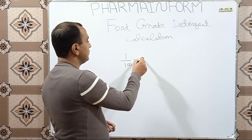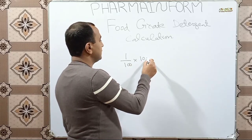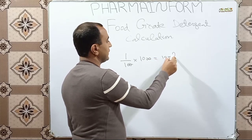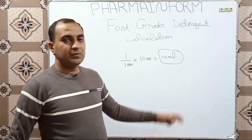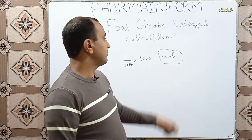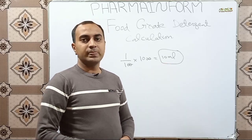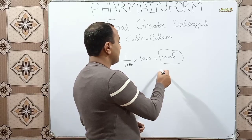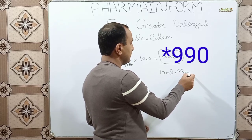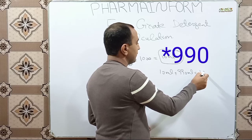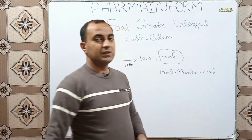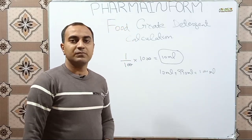1 over 100 into 1 liter, which means 1000 ml, so the answer will be 10 ml. This means we will take 10 ml of food grade detergent and make it up to 1000 ml. Or, 10 ml food grade detergent plus 990 ml water equals 1 liter or 1000 ml. I hope you are now familiar with how to prepare one percent food grade detergent.